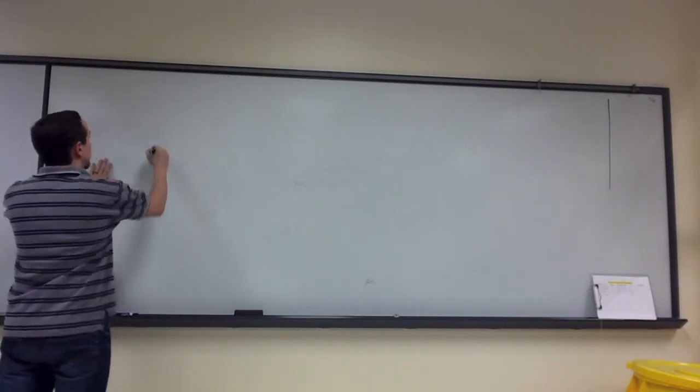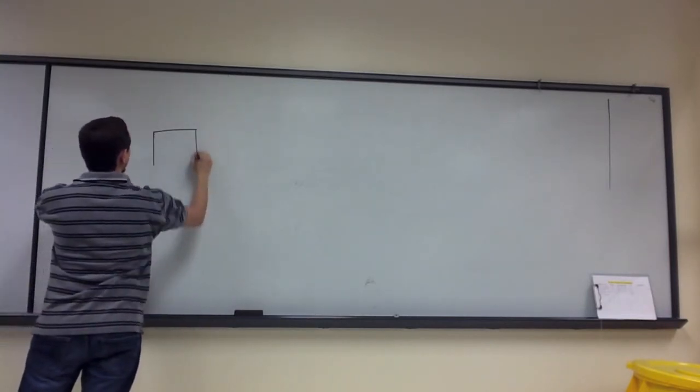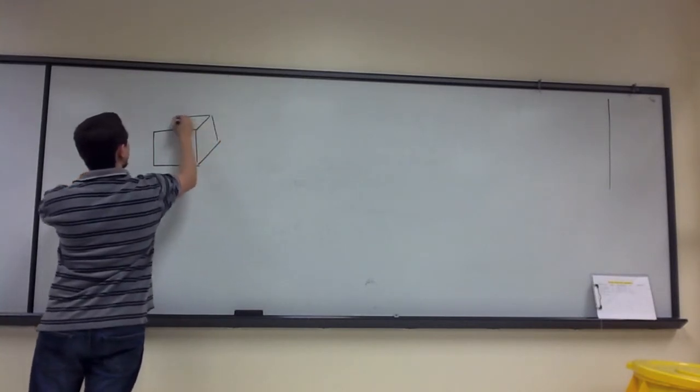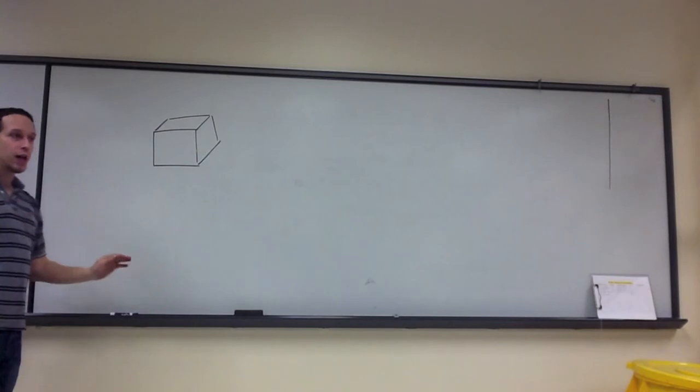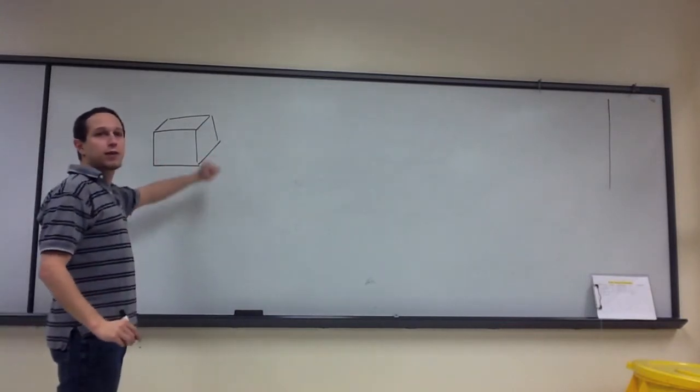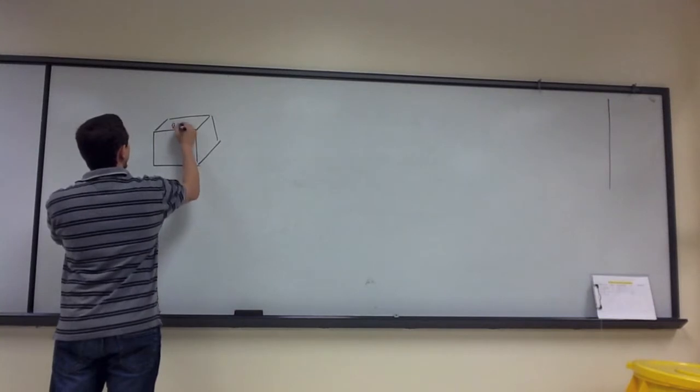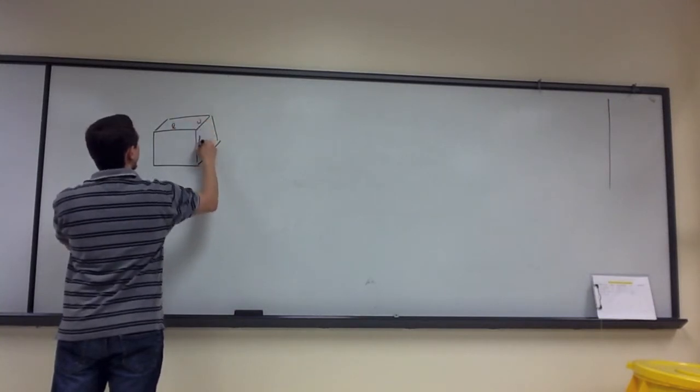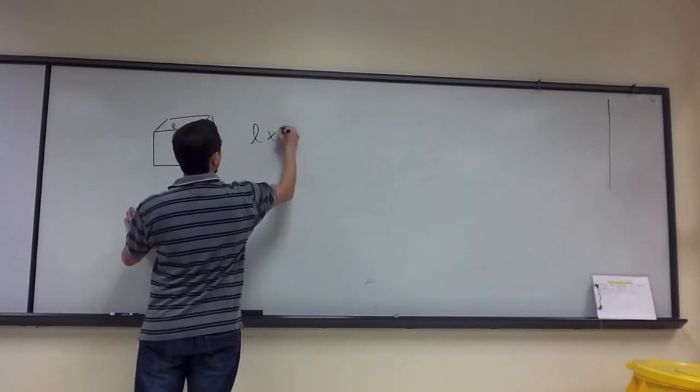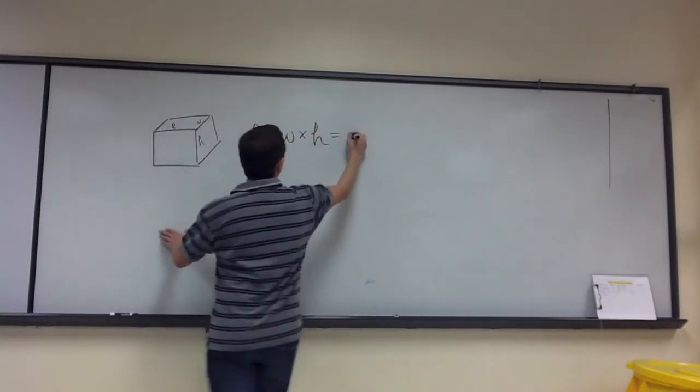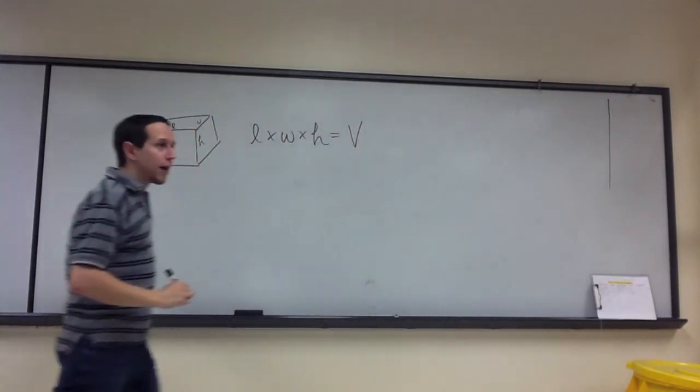The way to do that is to first think back to math class. So if you think about a cube, and I imagine at one point in time or another all of you have had to calculate the volume of a cube, it is length times width times height. So length by width by height gives us the volume of that cube.